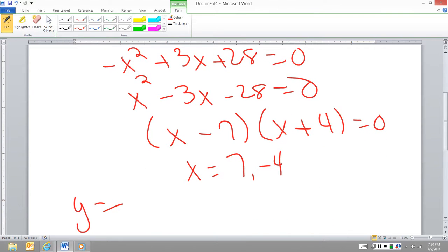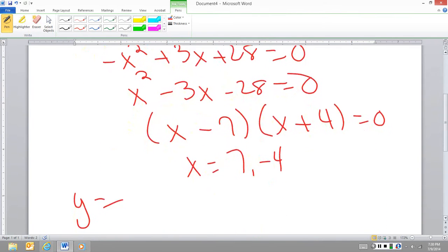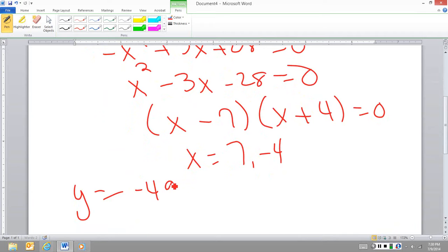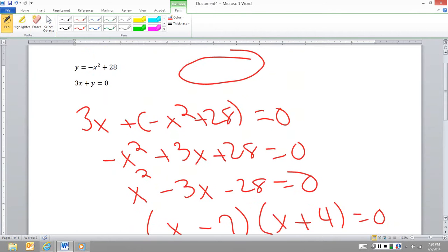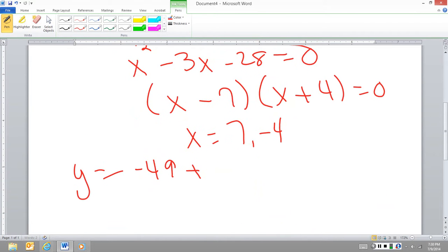So y equals, what do I have? I have negative 49. I'm squaring the 7 plus 28. So negative 49 plus 28 is negative 21. So my first point is 7, negative 21.